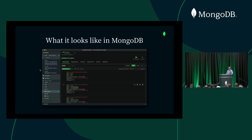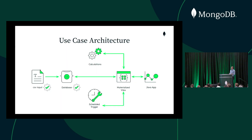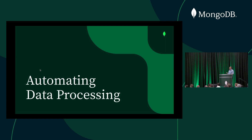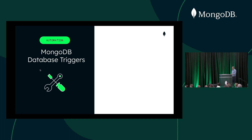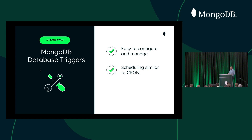We've created a materialized view with the calculations we need. Now, once we create the materialized view, we need a way to refresh it whenever a new price arrives. To do that, we use schedule triggers — we're going to automate the data processing using Atlas scheduled triggers. They're super easy to configure and manage, and we schedule them similarly to a cron job. Since our prices arrive every minute, I create a trigger which gets executed every minute, with JavaScript code attached that refreshes my materialized view automatically.